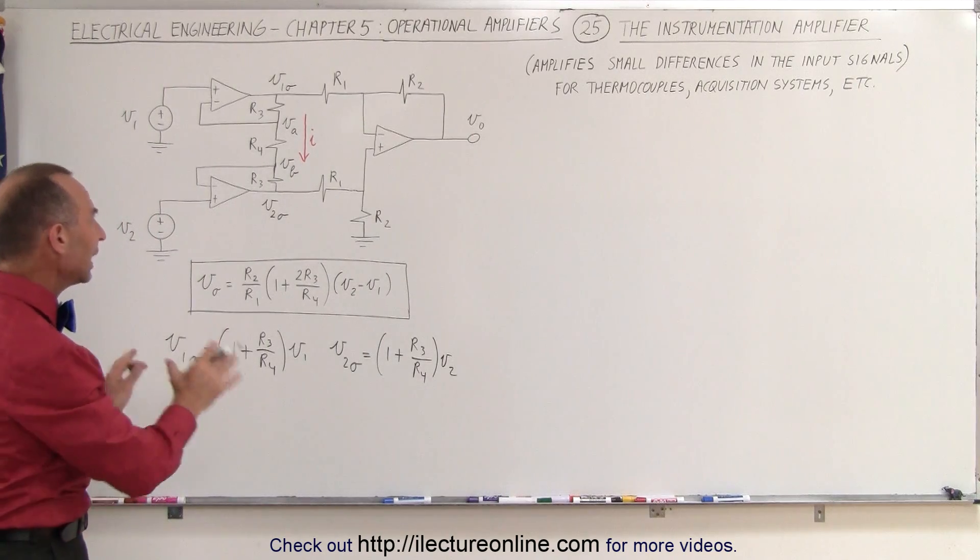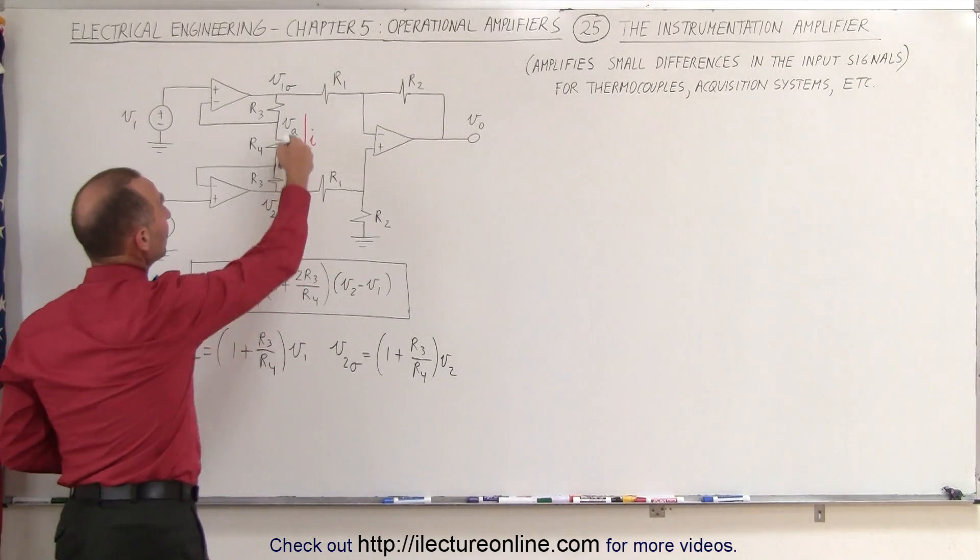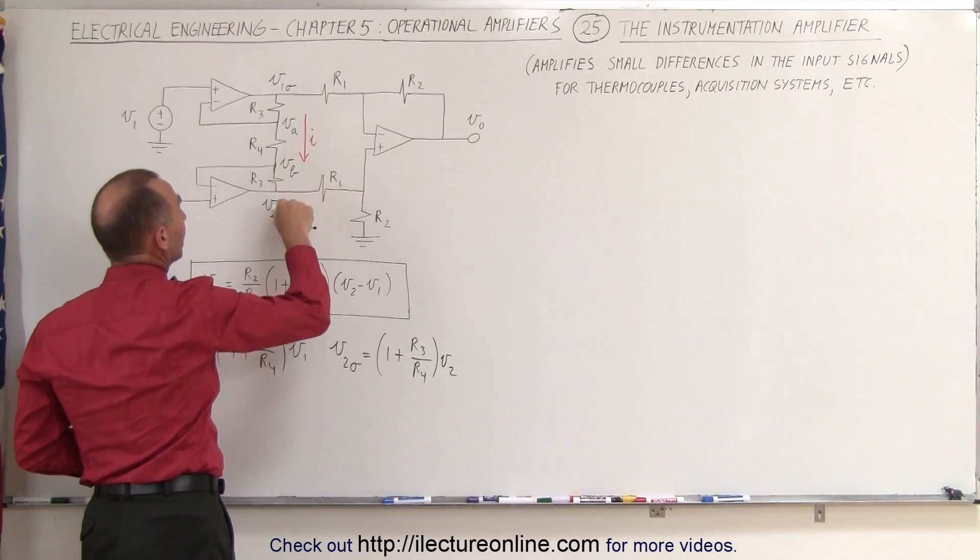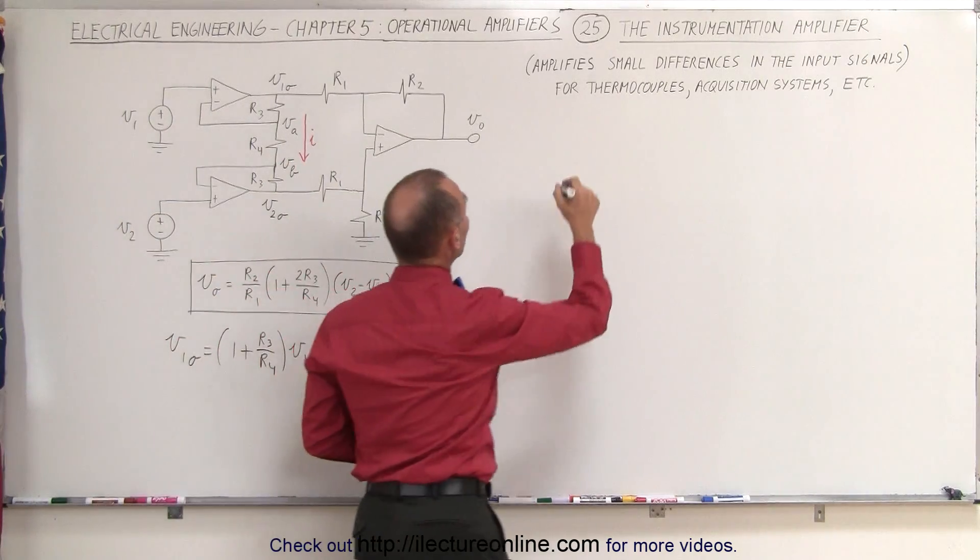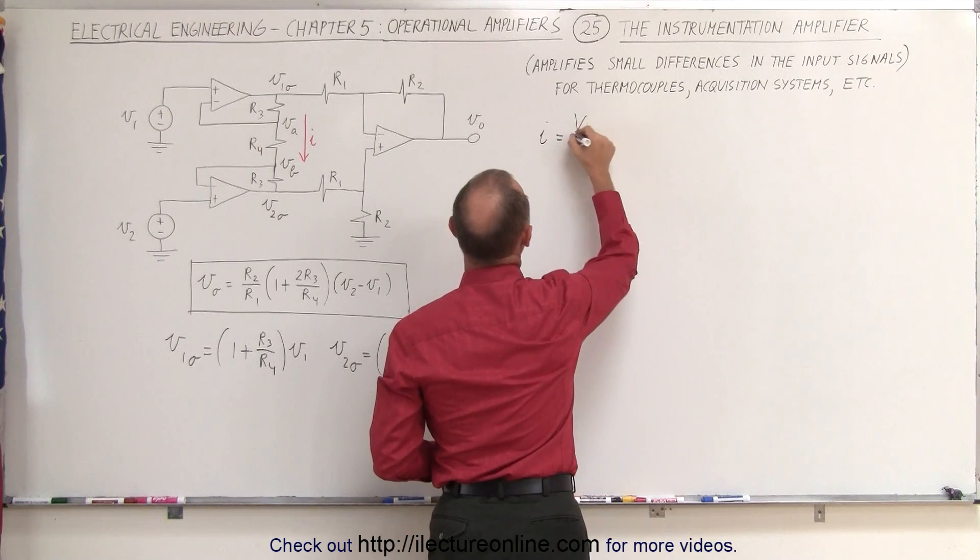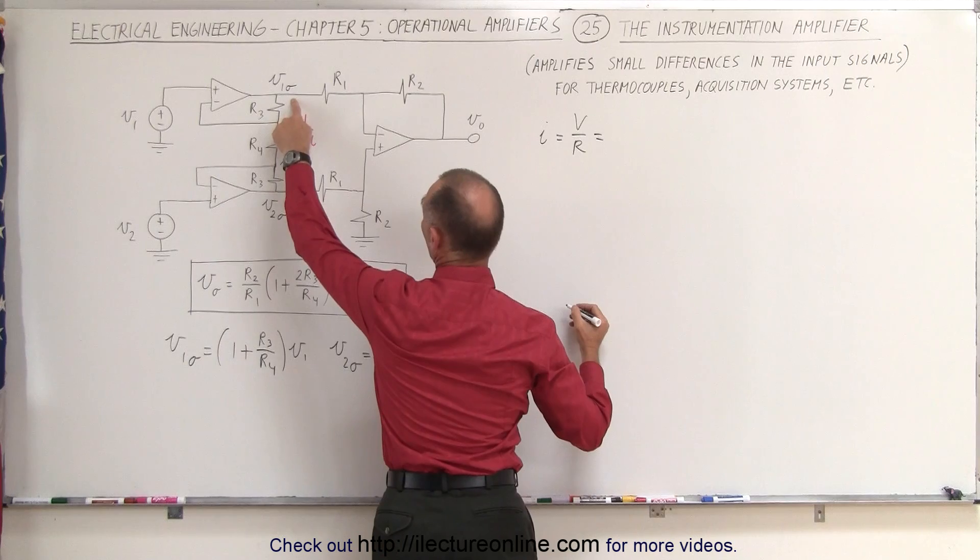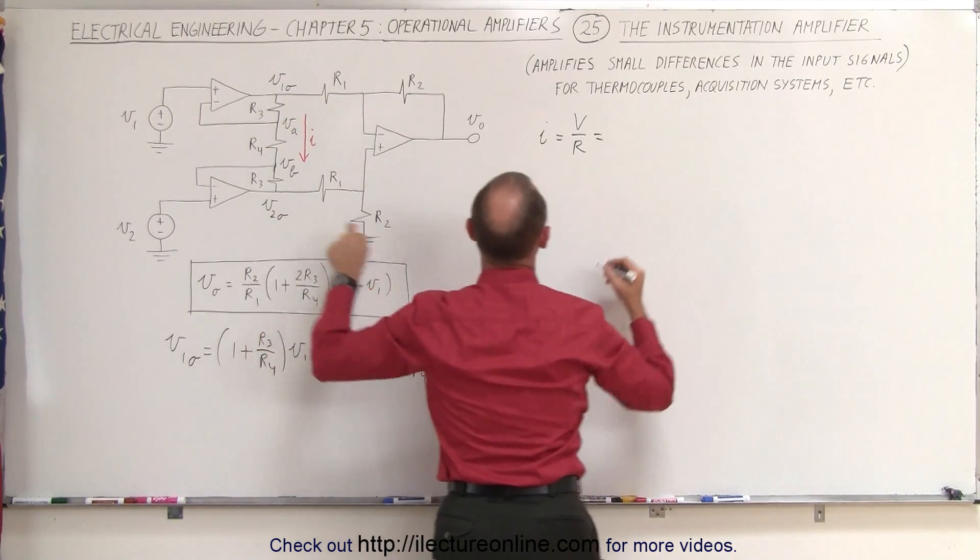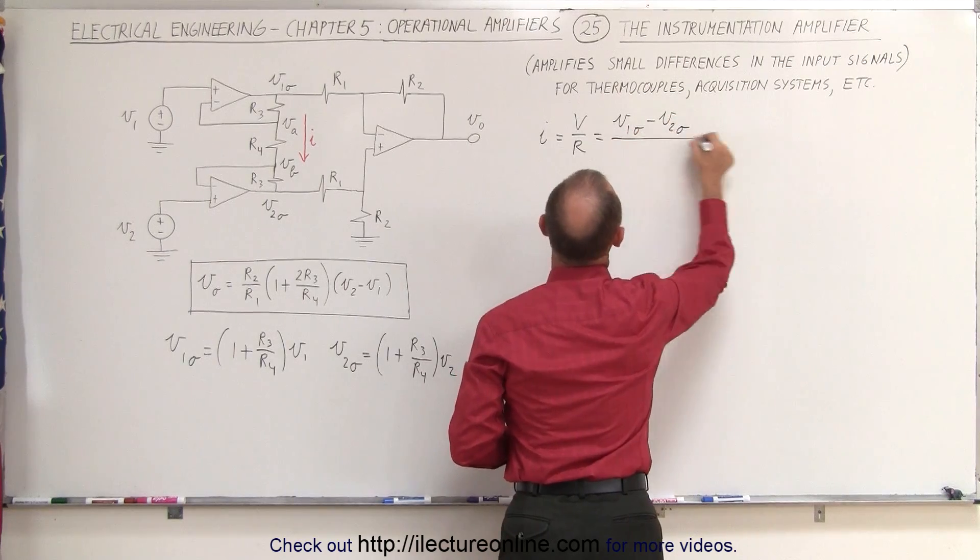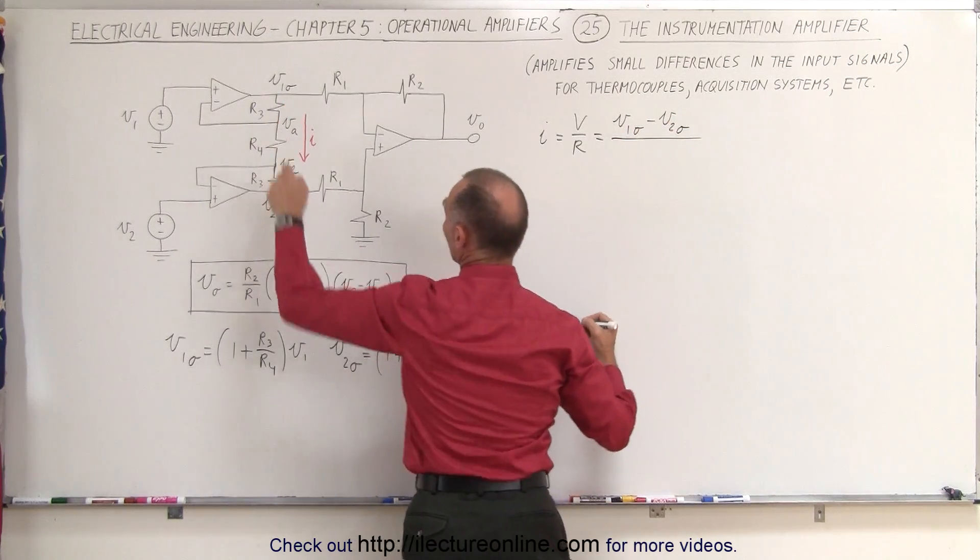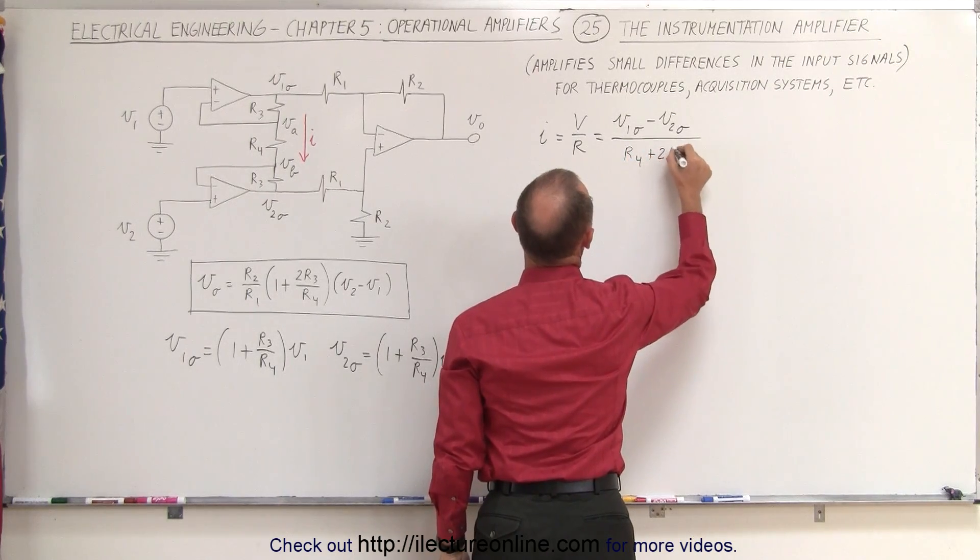So how can we then relate that to the output voltage there? Well we're going to do that by assuming that we have a current running from V1 output to V2 output. So the current equals I and using Ohm's law we can say that I is equal to the voltage divided by the resistance. The voltage will be the difference between V1 output and V2 output, so V1 output minus V2 output divided by the resistance between those two which would be R4 plus 2R3.